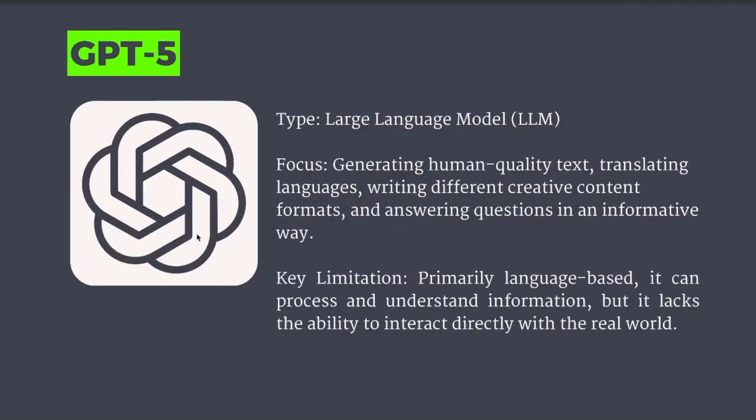If we think about GPT-5, this is the large language model that will be an advancement on GPT-4. It'll be doing a lot of the same things that GPT-4 is doing, but just doing them better. It might make decisions better when you're strategizing with it, it might be able to create copy that's a little bit better and longer. It'll probably be able to understand a lot more input in its context window. So GPT-5 is primarily a language-based model, but it'll improve on all the things we know and love with GPT-4.